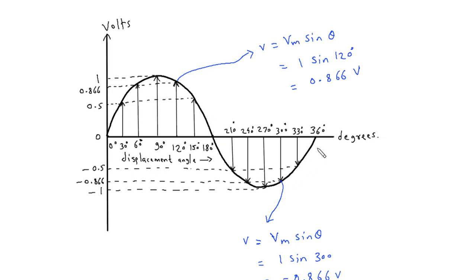Similarly, for all instants we can find voltage at any instant by using this formula: V is equal to Vm sin theta. If we take at this instant, here the displacement angle is 120 degrees, and peak voltage is 1 volt. So 1 sin 120 is 0.866 volt.